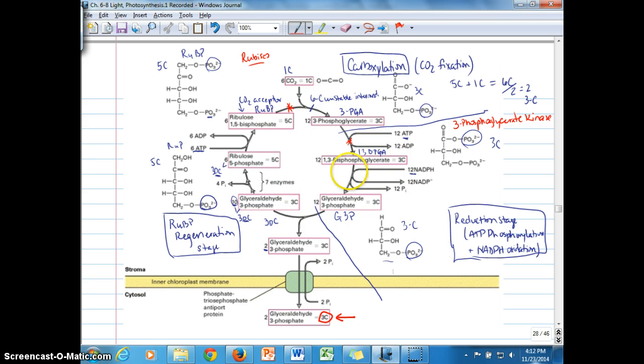Another enzyme that we need to take note of is right here in the reduction step, which is referred to as glyceraldehyde 3-phosphate dehydrogenase. Remember, glyceraldehyde 3-phosphate is our product there, so it carries the same name. That enzyme catalyzes the reduction of 1,3-bisphosphoglycerate, this molecule here, to glyceraldehyde 3-phosphate. It removes the phosphorus as it adds the electrons from NADPH.